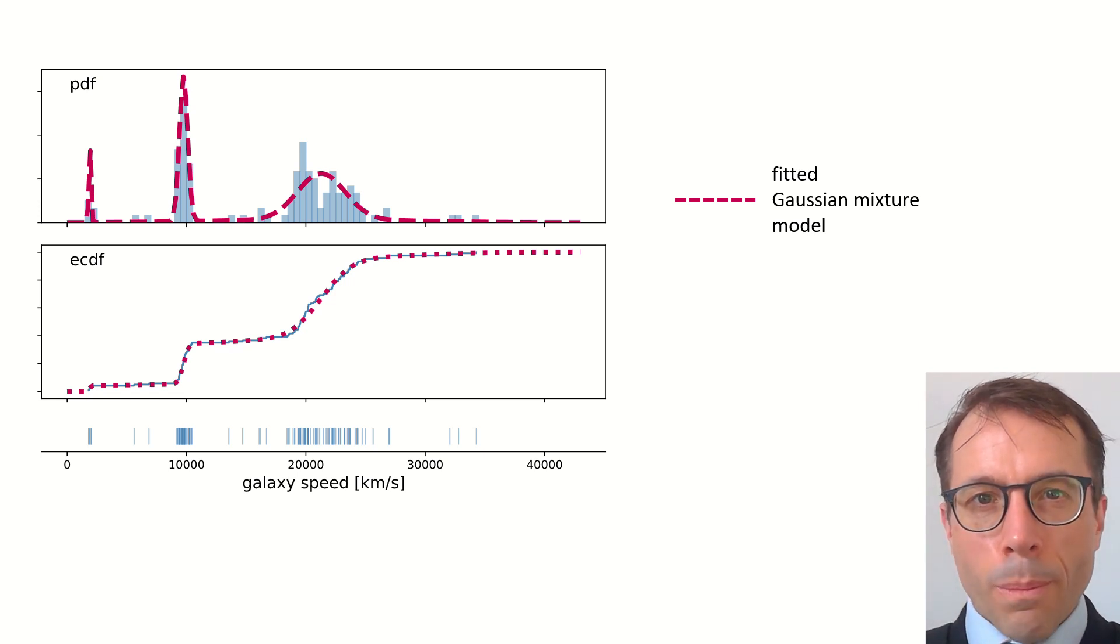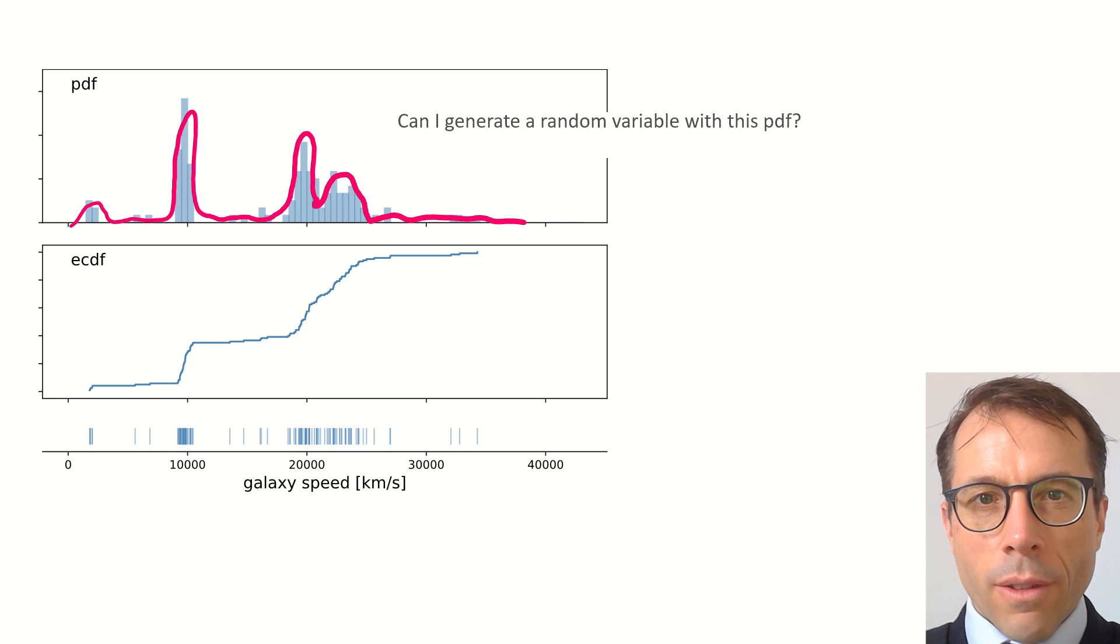But could we do better? If we wanted a perfect fit, we could just try drawing a very detailed custom PDF, to try and match all the ins and outs of the histogram as closely as possible, and then we could, in principle, try to figure out how to sample values from the random variable with this PDF.